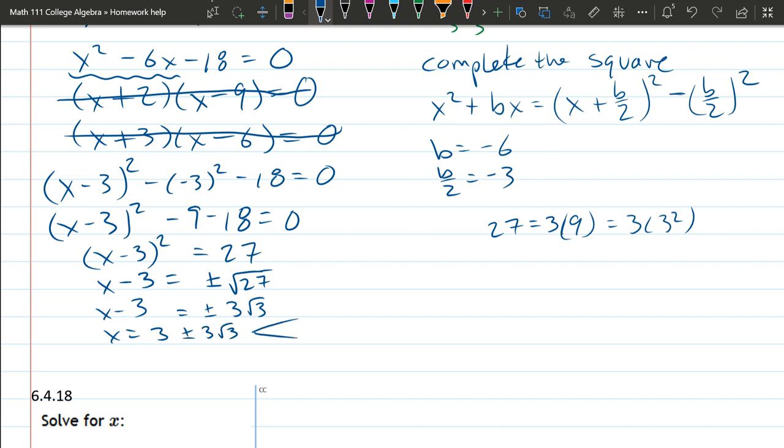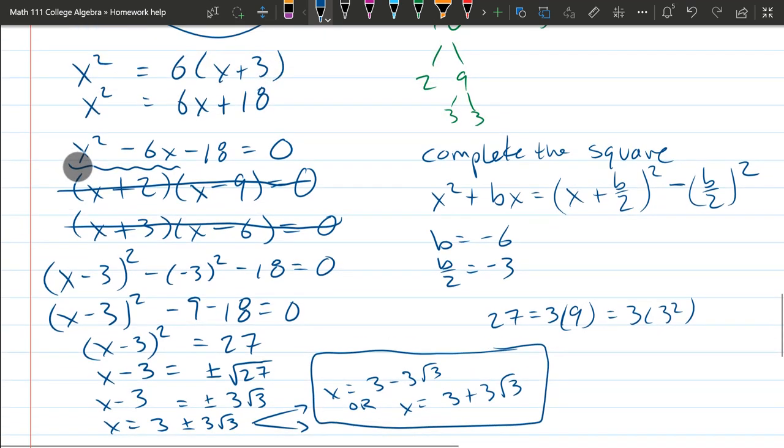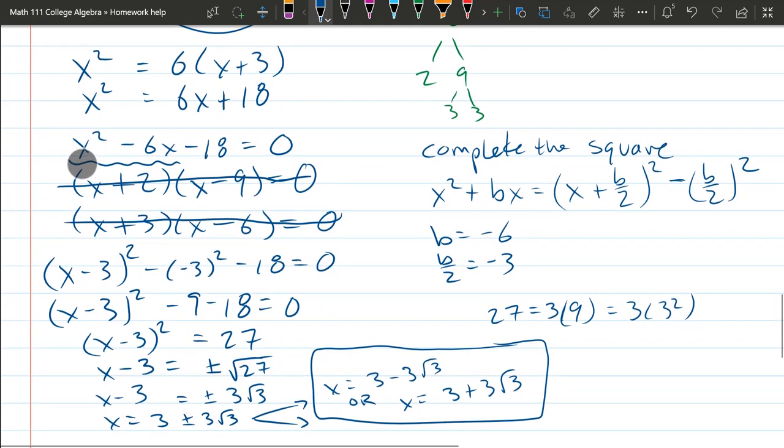So there's two solutions. x equals 3 minus 3 square root 3, or x equals 3 plus 3 square root 3. So these are our two answers. And we'll go look at what the question asked. Sometimes I only want one of the answers, sometimes both.